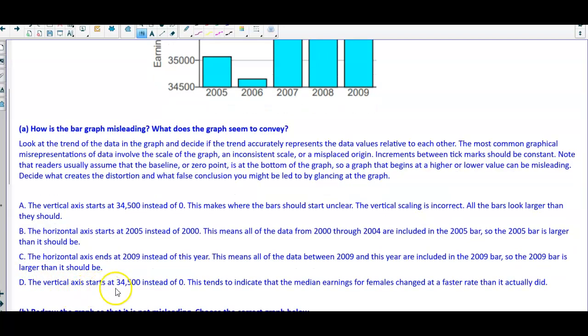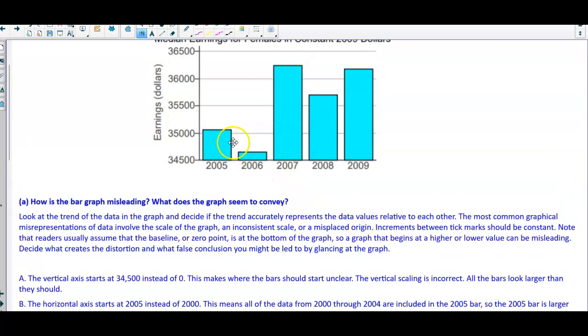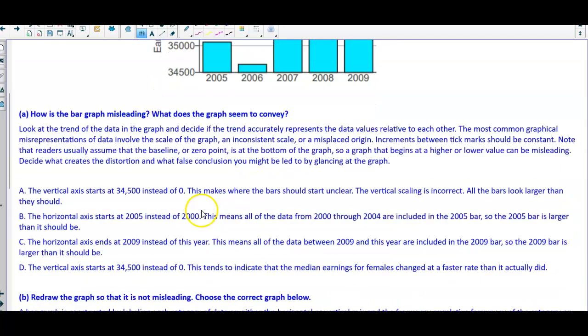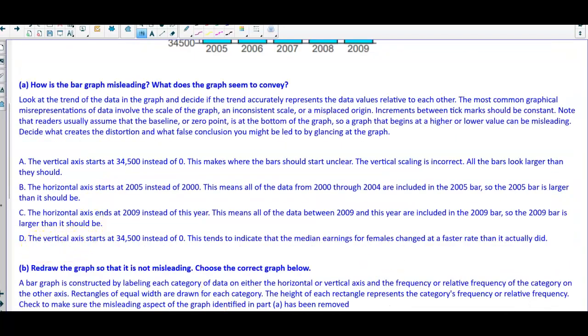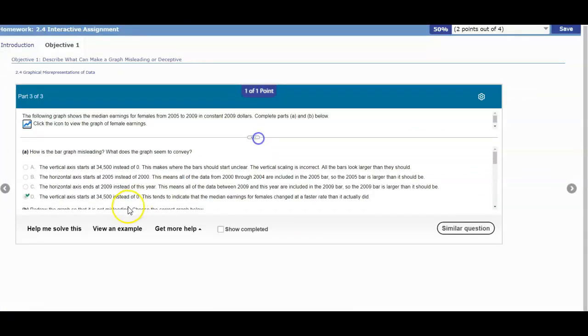D says the vertical axis starts at 34,500 instead of zero, which is the same thing we got in part A. This tends to indicate that the median earnings for females changed at a faster rate than it actually did, and that's true here. So it looks like our answer for the first part is D. The answer is D.